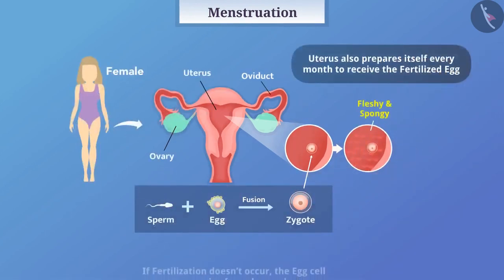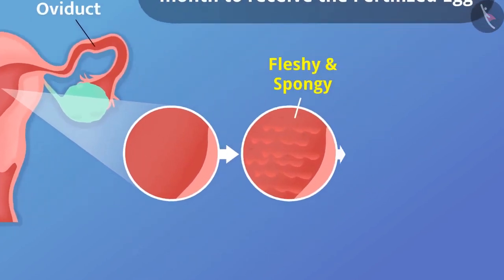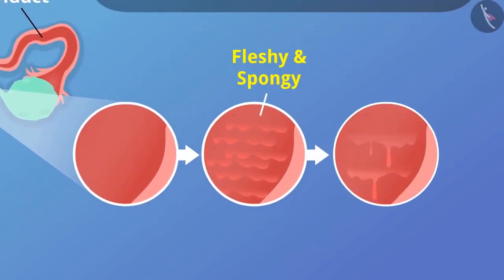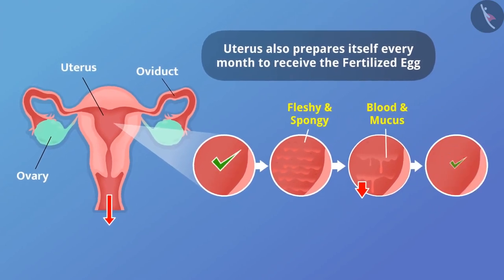But in case fertilization doesn't occur, the egg cell can survive only for one day. Therefore, there is no need for the new layer when fertilization does not occur. This layer is slowly broken and comes out from the vaginal tract in the form of blood and mucus, after which the uterine wall undergoes repair.